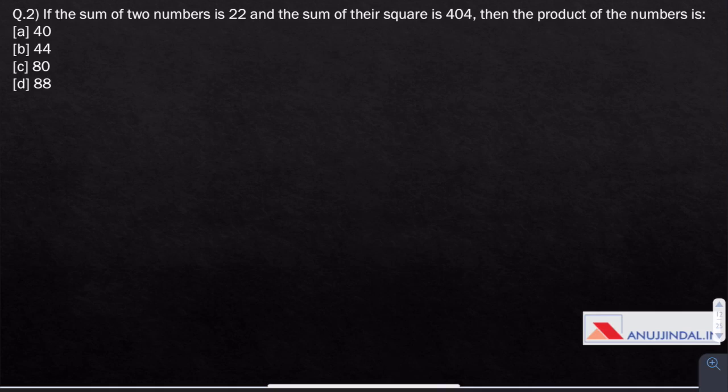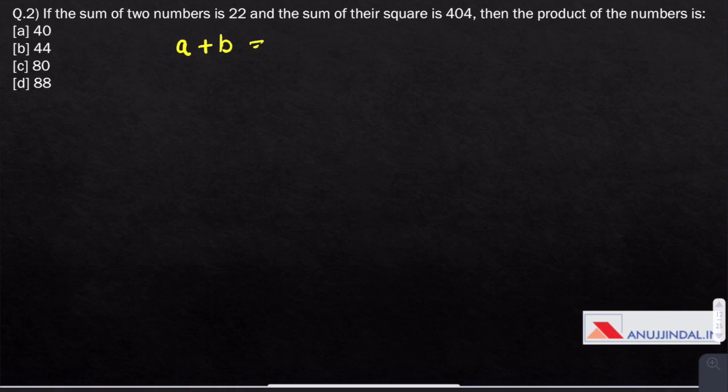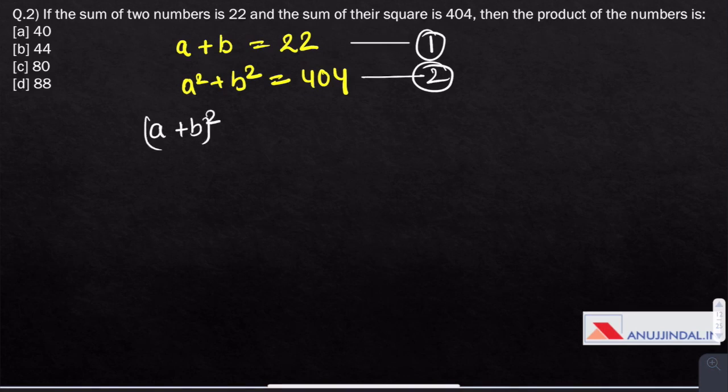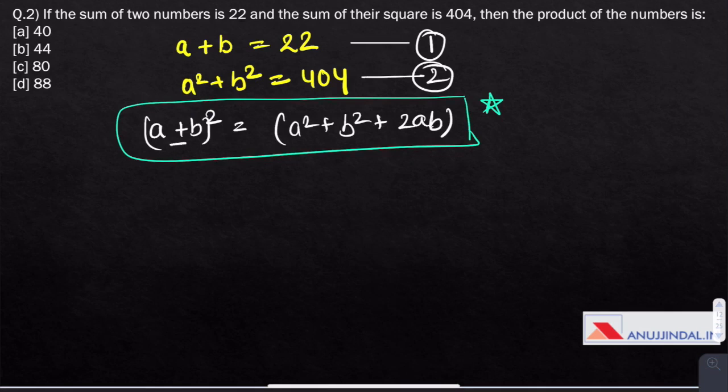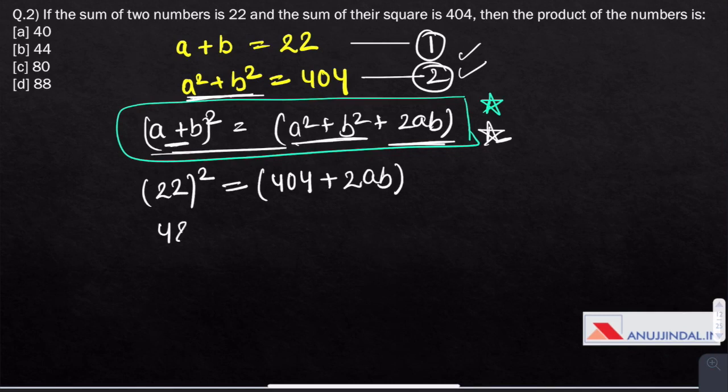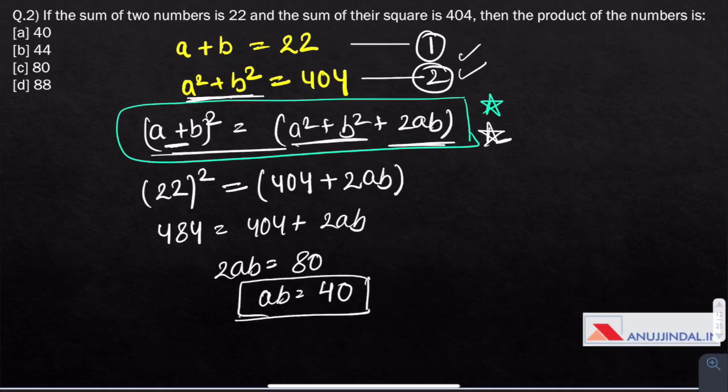Question 2. If the sum of two numbers is 22 and the sum of their square is 404, then the product of numbers is: let the numbers be A and B. A plus B equals 22 and A square plus B square equals 404. Using the formula A plus B whole square equals A square plus B square plus 2AB, we get 22 square equals 404 plus 2AB. So 484 equals 404 plus 2AB. 2AB is 80, AB equals 40.